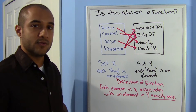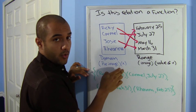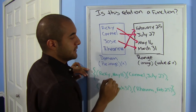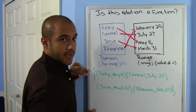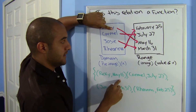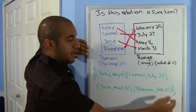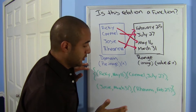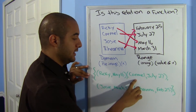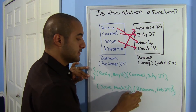Let's dig a little deeper. They can also call set X your domain, pre-image, or simply X. Set Y can be called your range, image, or your Y values. Each one of these would be an element. I can also use ordered pairs to represent this information: Ricky/May 16th, Carmel/July 27th, Josie/March 31st, and Rihanna/February 25th. Notice that the elements of X do not repeat — so this is a function. If any of the X's repeated, then it's not a function.